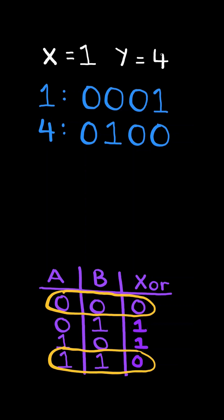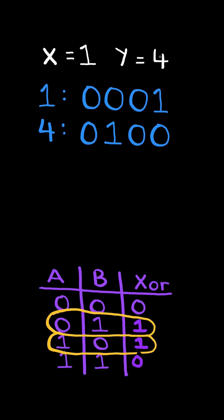If both bits are equal, the result of the XOR operation is 0. If both bits are different, the result of the XOR operation is 1.